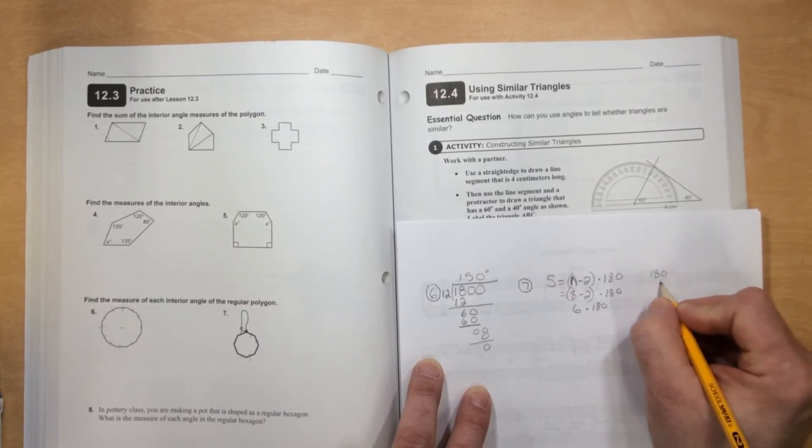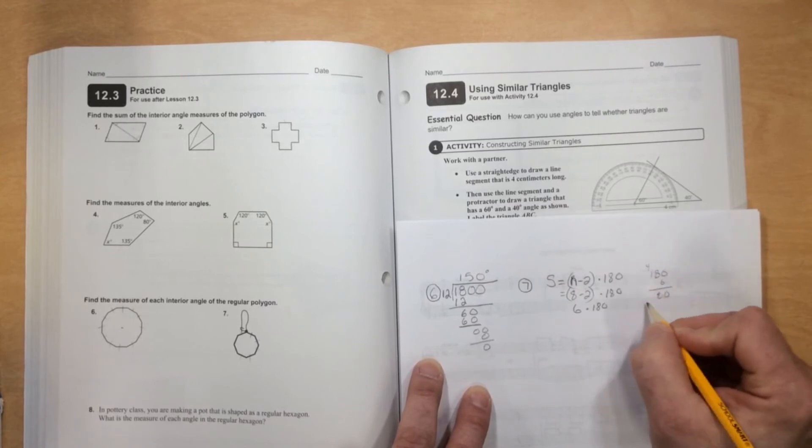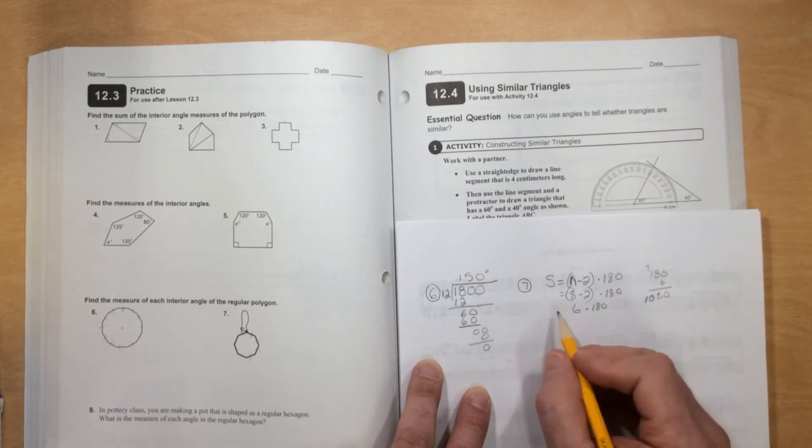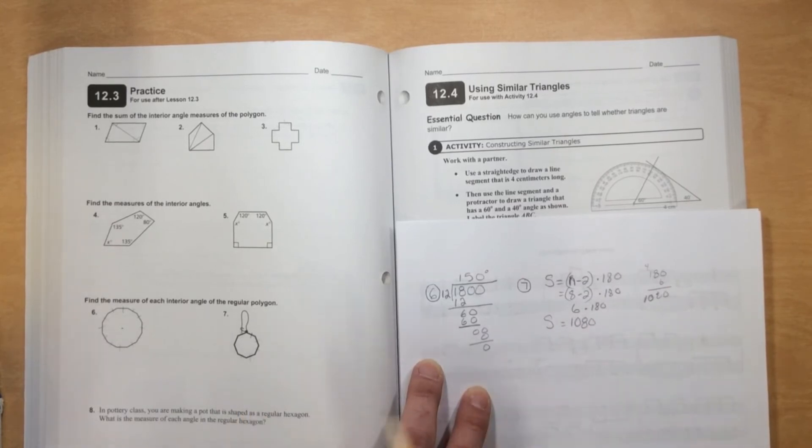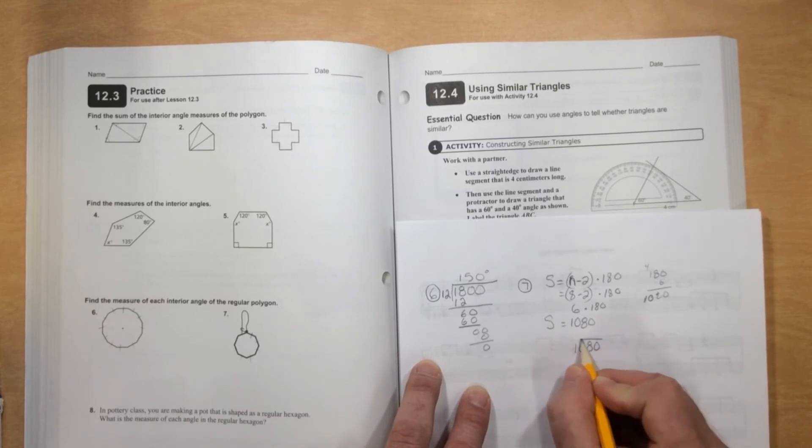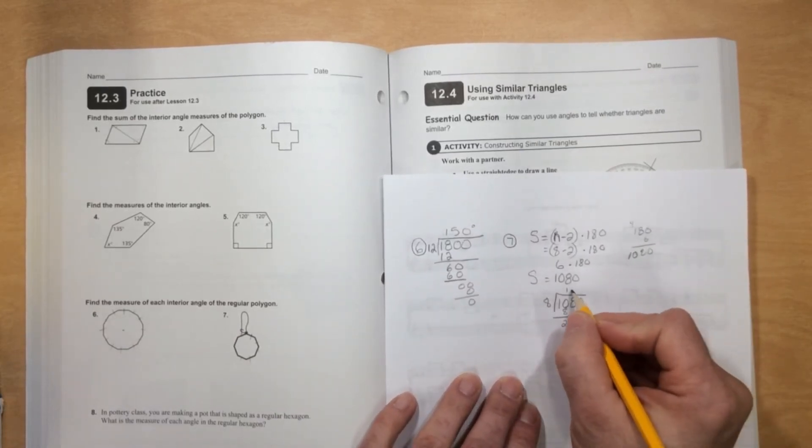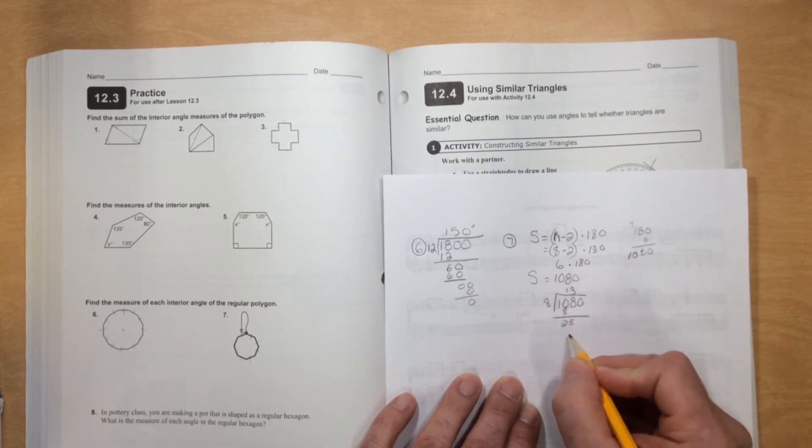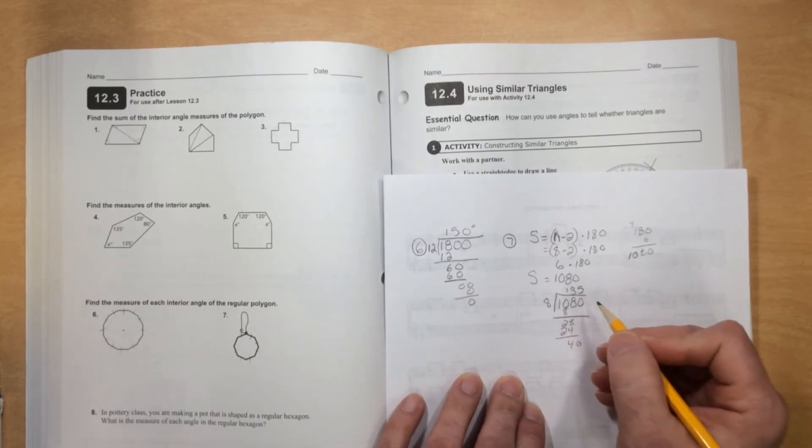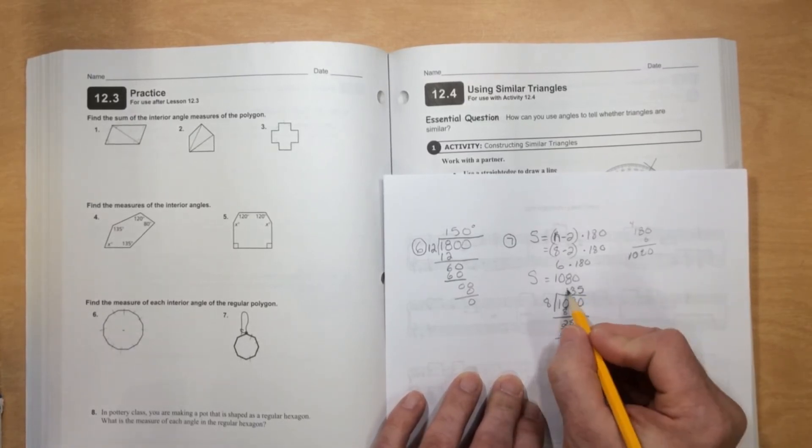What is 6 times 180? 180 times 6 is 1,080. So the sum of all of them is 1,080. Well, I have 8 of them, so I will divide by 8. 8 goes into 10, 3 times which is 24, and 8 goes into 40 five times. So 135.